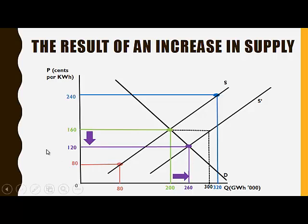You can see that due to the increase in supply, there has been a decrease in the equilibrium price and an increase in the equilibrium quantity.